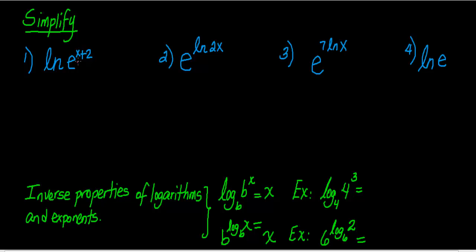Hello everyone. In this video we're going to simplify natural logs. Before we start, I want to talk to you about E. Just like pi — pi is equal to 3.14 and this number goes on forever and ever and it never ends. This is called an irrational number and we use the symbol pi to represent that very long number. Well, E is another irrational number. E is equal to 2.718 and it goes on forever, and we use the letter E to represent it.